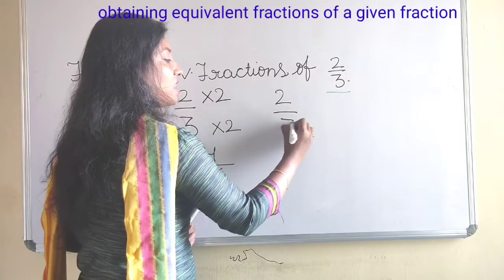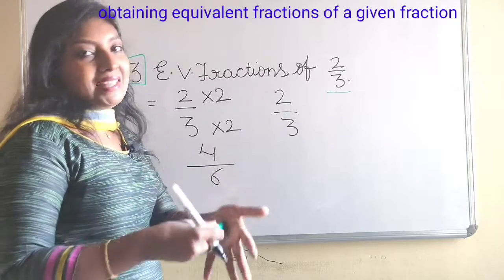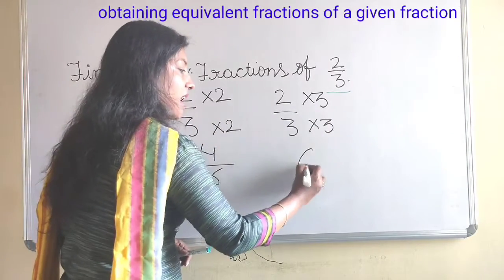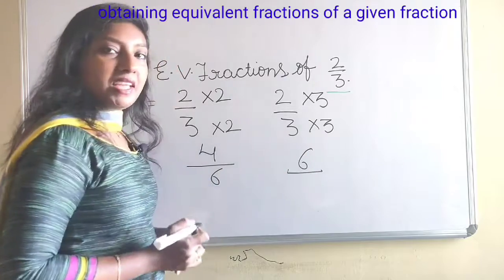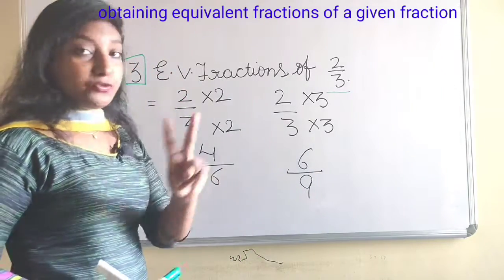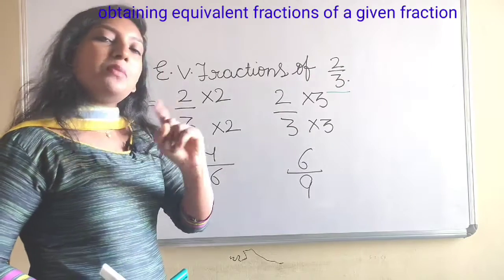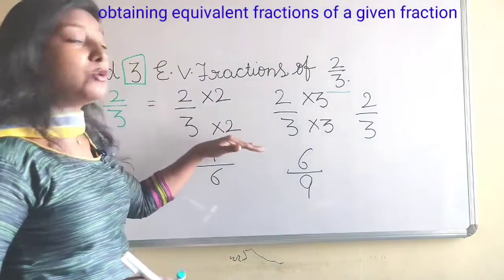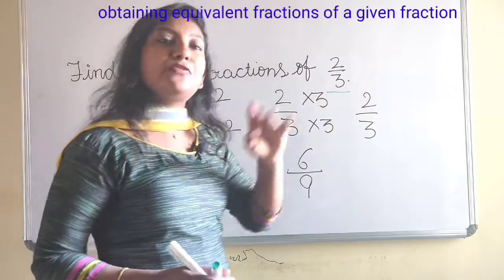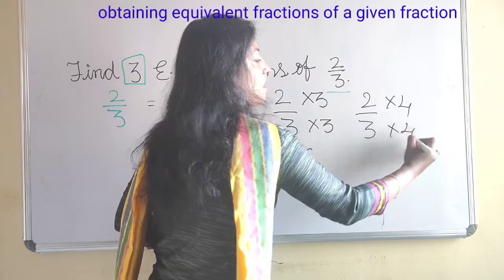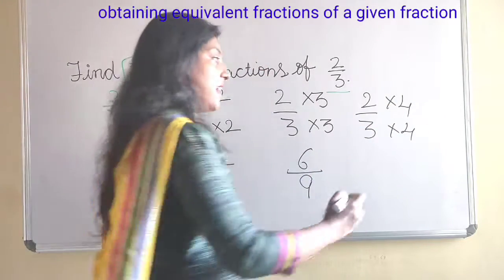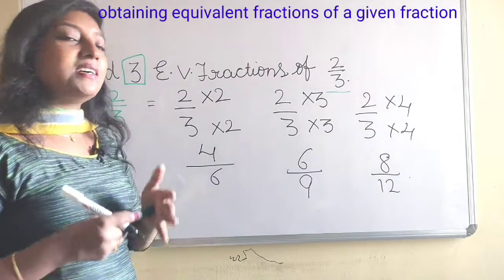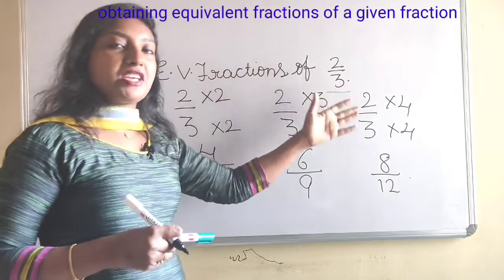Next, take the same fraction and multiply with the next number, 4. 2 multiplied by 4 gives 8, and 3 multiplied by 4 gives 12. So 8 by 12 is the third equivalent fraction of 2 by 3. In this way, you can find the required number of equivalent fractions of a given fraction.